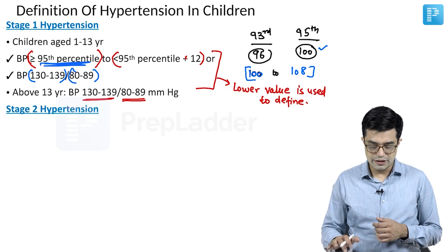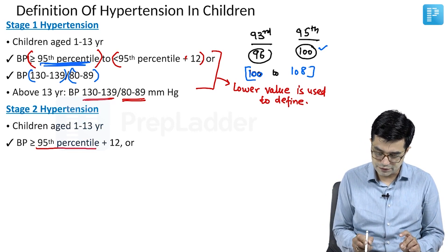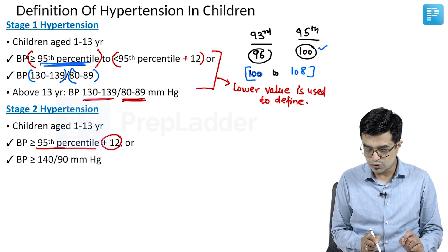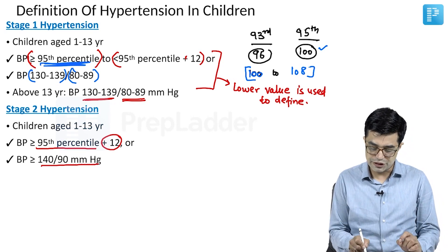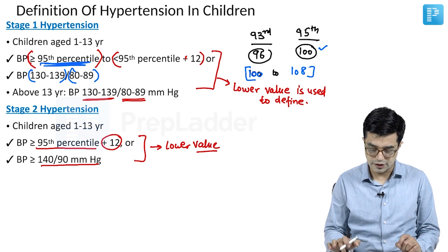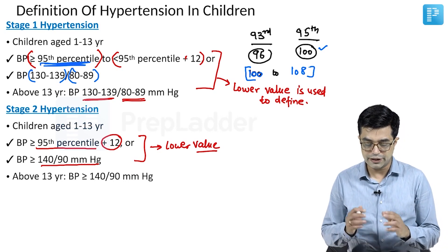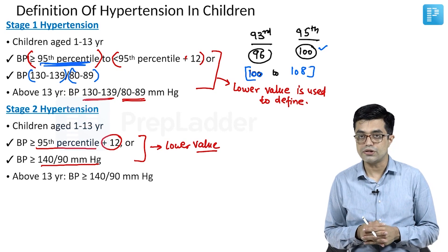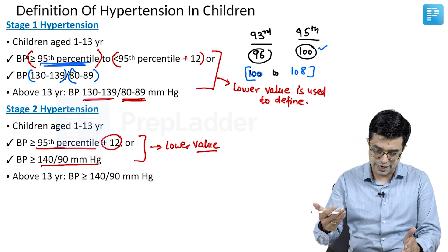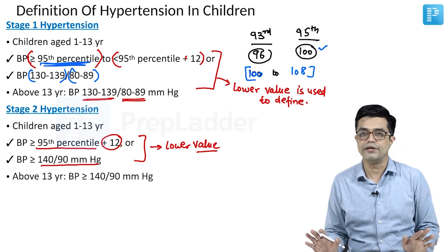For Stage 2 hypertension in children aged 1 to 13 years, the BP should be equal to or above the 95th percentile value plus 12, or equal to or more than 140/90 mmHg — whichever is lower. For children above 13 years of age, BP equal to or more than 140/90 mmHg defines Stage 2 hypertension. At the end of this video, clinical examples will be taken up so these concepts are crystal clear.